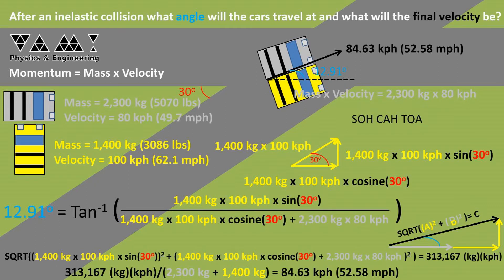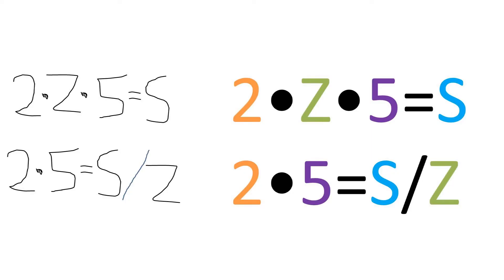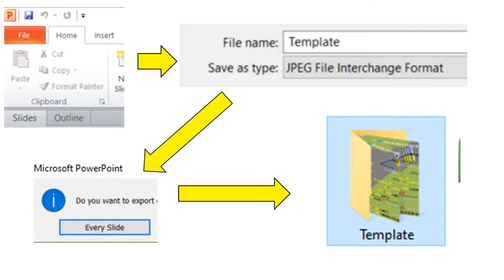I use Microsoft PowerPoint to create slides based on problems I think up or problems from a textbook that I modify to make my own. I make a final slide with all the math on it, and when making the slide I use a color-coded system for all the variables because it's easier to follow what happens between steps — kind of like an artificial synesthesia. I then make multiple copies of the slide and take out information depending on which step of the video I'm on.